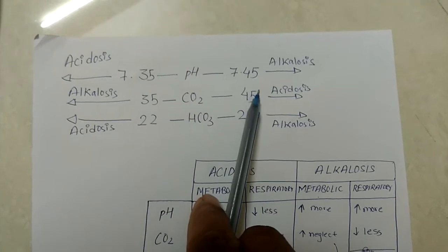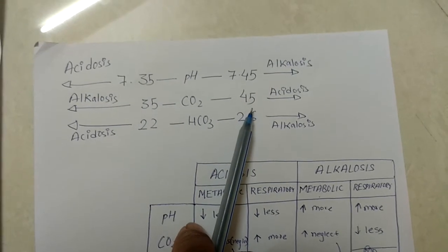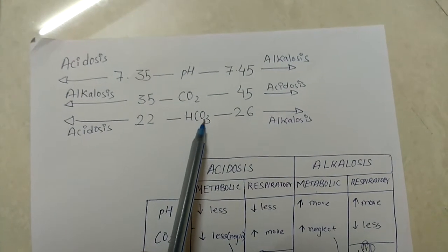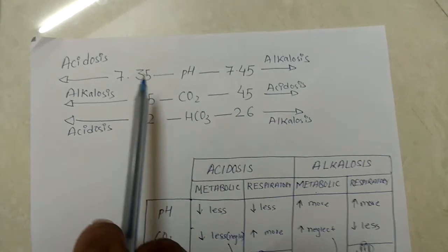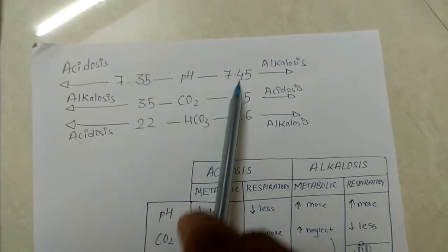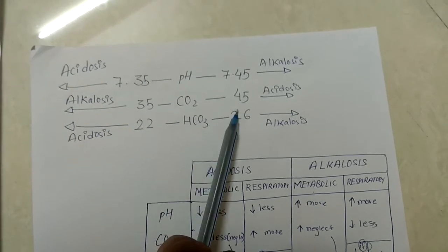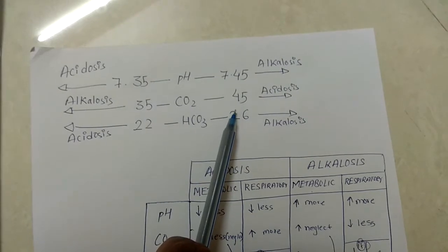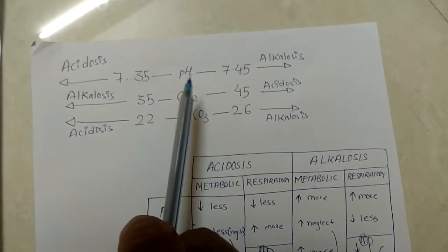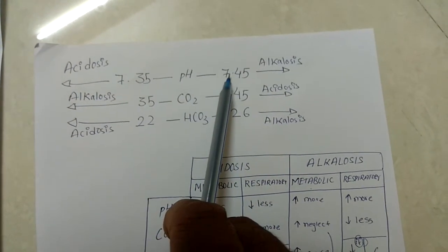The normal values are: pH 7.35 to 7.45, CO2 35 to 45, HCO3 22 to 26. You can remember these likewise — pH, CO2, HCO3 — so 7.35, 35, then 7.45, 45. For HCO3, you can remember: 2, 2, 2 — three 2s — so 22 and 26.